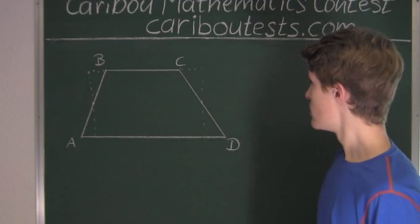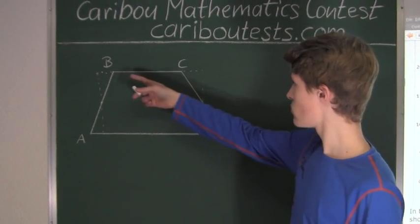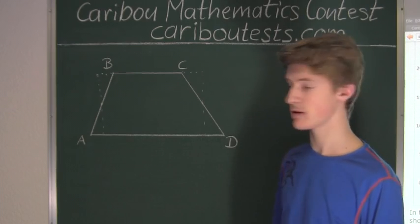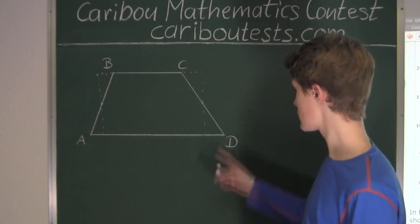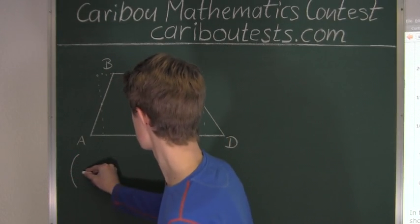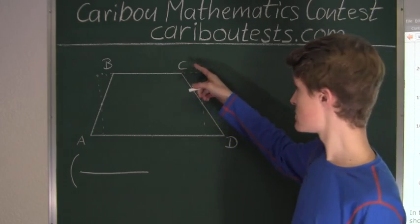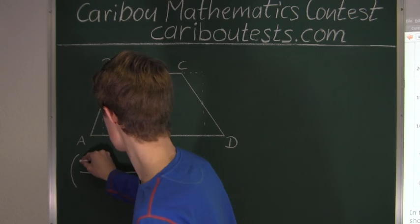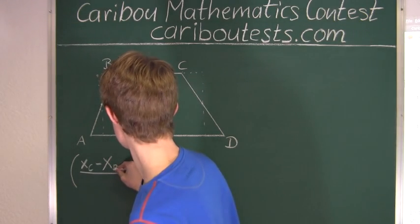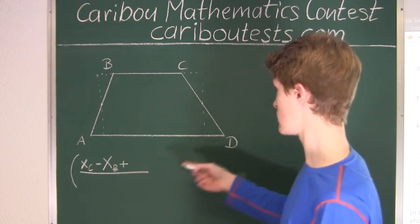Alright, now let's express this length in terms of the x-coordinate of point B and the x-coordinate of point C, and let's express this length in terms of the x-coordinate of point A and the x-coordinate of point D. Now we have xC minus xB, and this is plus xD minus xA.